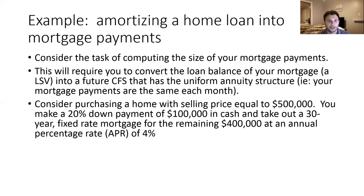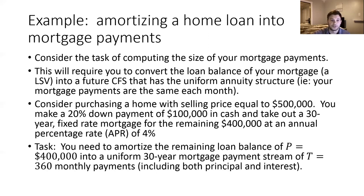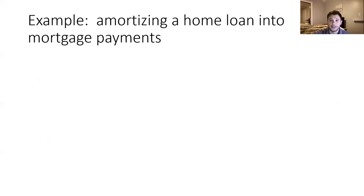We don't have half a million bucks lying around, so we put down $100,000 against the price of the home, which means we need to take out a mortgage against the remaining $400,000 balance from the bank. We're going to take out a 30-year fixed-rate mortgage at a fixed interest rate, consistent with our uniform annuity framework. The number of periods is defined by the duration of the mortgage — 30 years — which is going to correspond to 360 monthly payments. The task at hand is to amortize that remaining loan balance of $400,000 into a uniform 30-year mortgage payment stream involving 360 periods of payment. Those payments are going to include both the principal as well as the interest on the funds that were loaned.